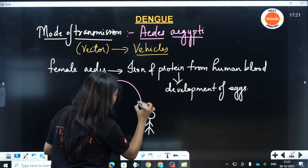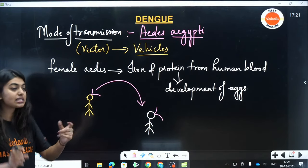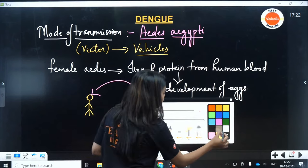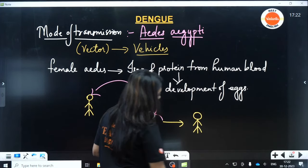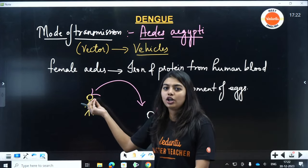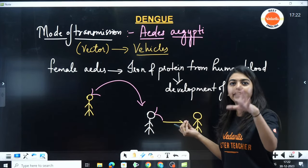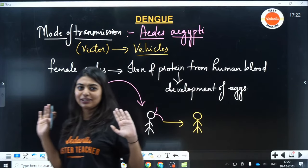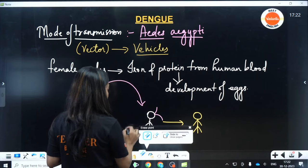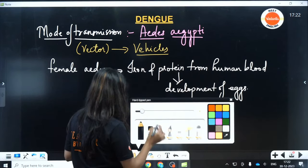This mosquito will now go and bite a person who does not have Dengue. So this infected mosquito has come and bitten a person who did not have Dengue, which will make that person affected. This whole thing happened because the mosquito did not know it was infected with Dengue virus — because it does not have any symptoms.